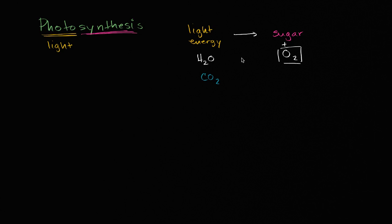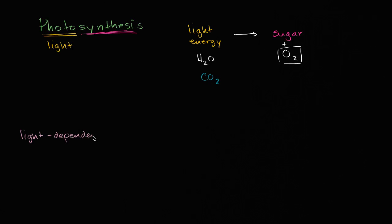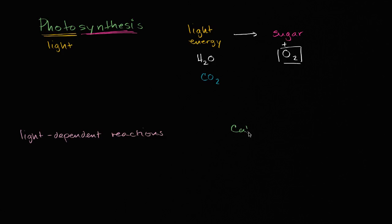Now I'm going to break photosynthesis out into two stages. The first stage we can call the light-dependent reactions, and the second stage I will call the Calvin cycle.